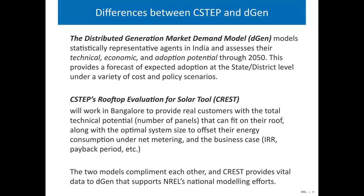If we installed rooftop PV on every available square meter, how much capacity and generation would we have? Economic potential then subsets that — filtering down to what of that technical potential is actually economic to install, meaning it would pay itself off over a reasonable system lifetime at a feasible rate. Adoption potential is the unique perspective DGEN takes, using advanced customer adoption modeling to simulate market diffusion. If your neighbor adopts rooftop PV, you're more likely to adopt it too — we simulate that network effect through diffusion modeling. DGEN provides detailed adoption forecasts at the state or district level.